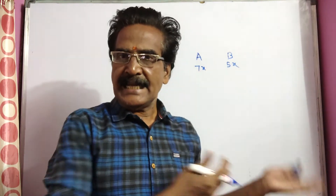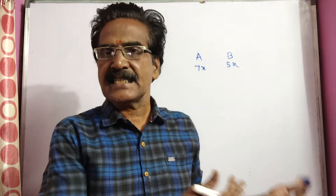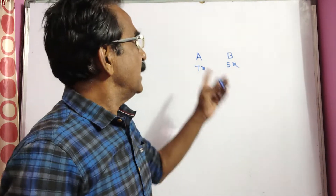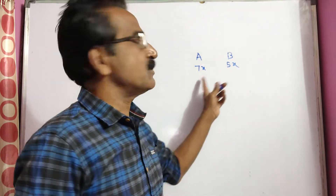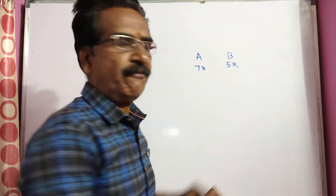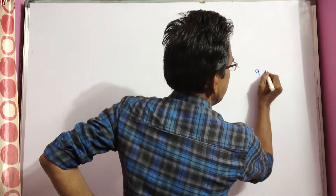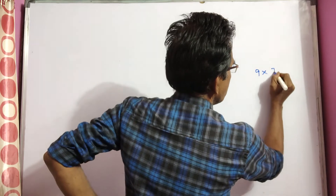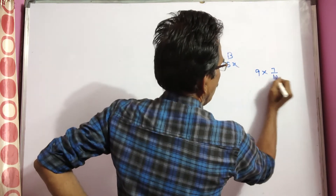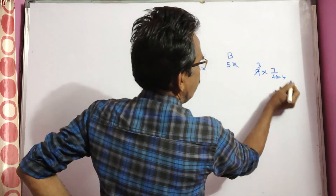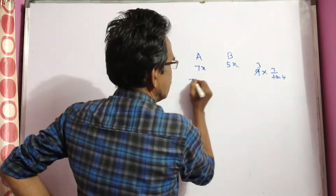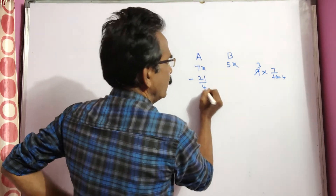Now 9 liters of mixture is drawn out. If 9 liters of mixture is drawn out, liquids A and B come out in the ratio 7 is to 5. So 9 liters into 7/12 — that is 21/4 liters of liquid A comes out.